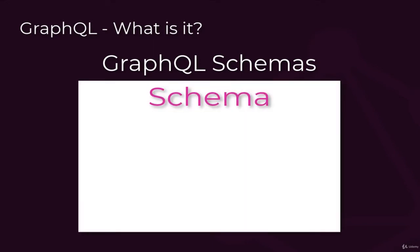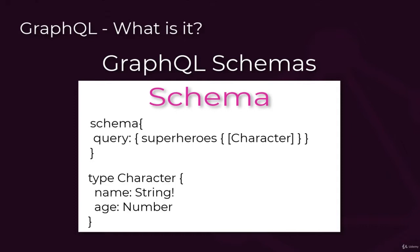For our imaginary website, the schema might look like this. First, we see there's a single operation for query called Superheroes. What follows is exactly what the operation will return. In this case, it's an array of objects of the character type, which actually makes sense. You can think of GraphQL types as object definitions, similar to Java class definitions, for example.